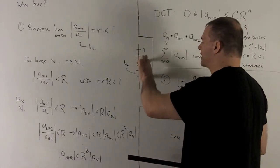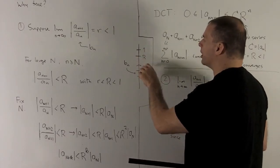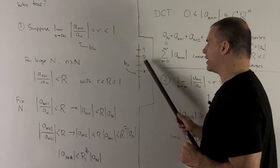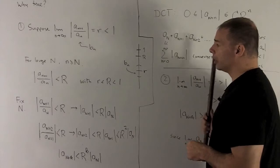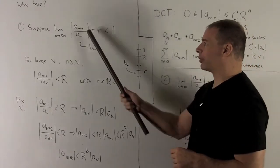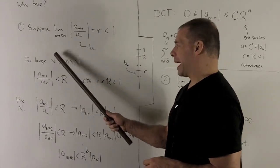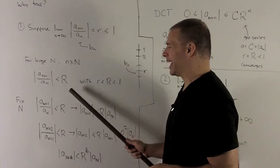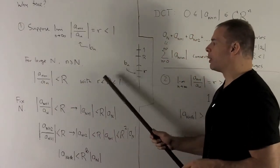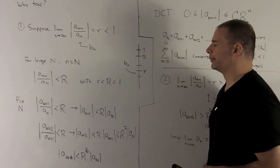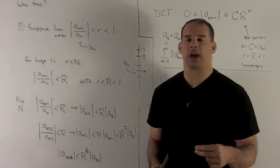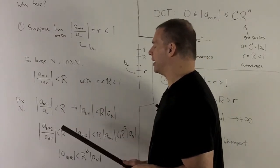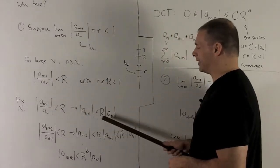We choose the interval so that its top is still strictly less than 1, leaving some space. We pick any number in that gap and call it capital R. Then all the b sub n's are strictly less than that capital R. Replacing b sub n with what it originally was: for some capital N, if we take any small n bigger than or equal to capital N, we have the absolute value of a sub n+1 over a sub n strictly less than capital R, with small r strictly less than capital R strictly less than 1.